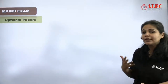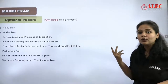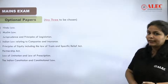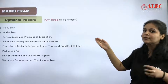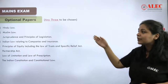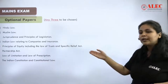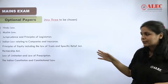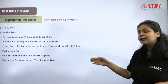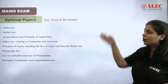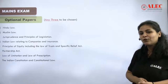For the optional papers, you have a list of subjects from which you must choose three papers. The list includes: Hindu Law, Muslim Law, Jurisprudence along with Principles of Legislation, Indian Law relating to Companies and Insurance, Principles of Equity with Trust and Specific Relief Act, Partnership Act, Law of Limitation and Prescription, and Indian Constitution and Constitutional Law. You have to choose three subjects of your choice from this list.